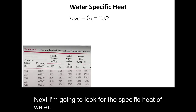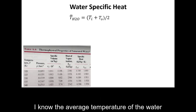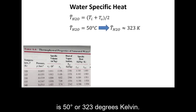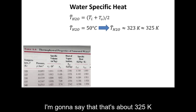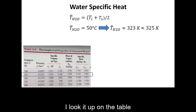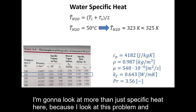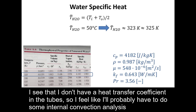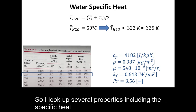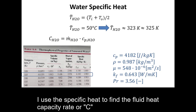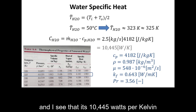Next I look up the specific heat of water. The average water temperature is 50 degrees Celsius, or 323 Kelvin, which I round to 325 Kelvin. I look up several properties — not just specific heat — because I notice the problem doesn't give a heat transfer coefficient inside the tubes, so I'll likely need to do an internal convection analysis. Using the specific heat, I calculate the fluid heat capacity rate on the cold side, capital C_cold, and find it is 10,445 watts per Kelvin.